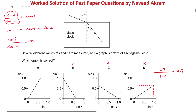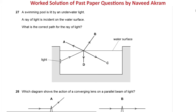Now let's check option A. If we take its slope, the vertical distance (rise) is 1 and the horizontal distance (run) is about 0.7. Dividing 1 by 0.7 gives approximately 1.43, which lies in the range of refractive indices for glass. So option A is the right answer for this question.